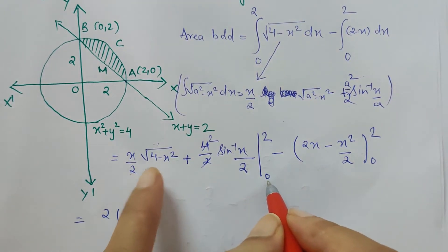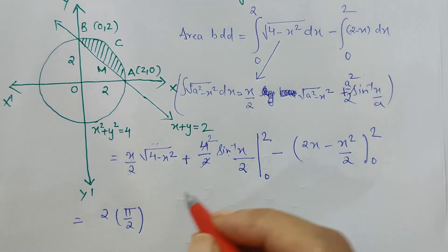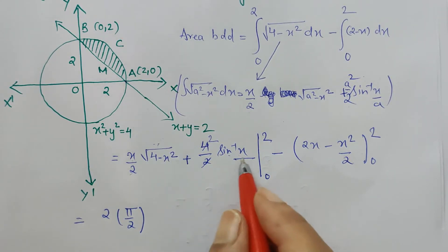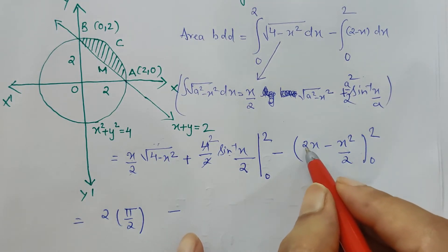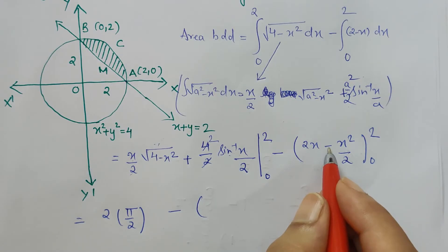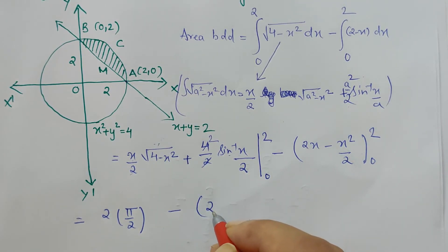When I put the lower limit, it is completely 0, and sin⁻¹(0) is also 0, so there will not be any term existing when we put the lower limit. Now minus, let's put the upper limit here: 2(2) is 4, minus 4/2 which is 2, so 4 - 2 is 2.